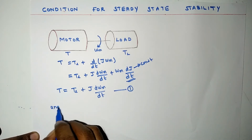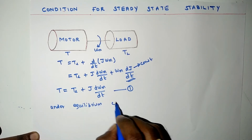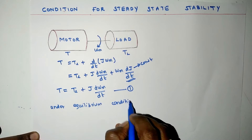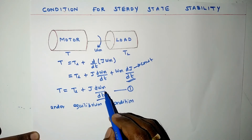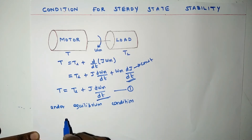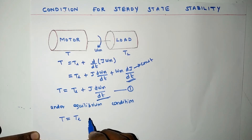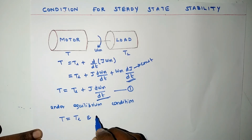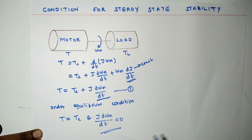Under equilibrium condition, the angular speed of the motor will be constant. So the differentiation of constant with respect to time becomes zero. Therefore, under equilibrium condition, we can write T = TL, and J * (d omega_m / dt) = 0. This is the steady state equation under equilibrium condition.